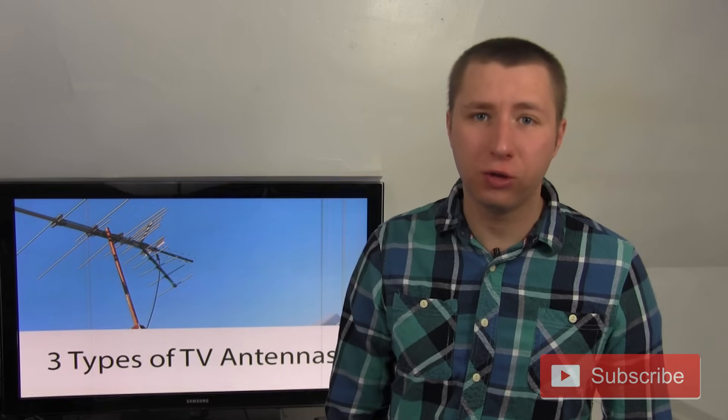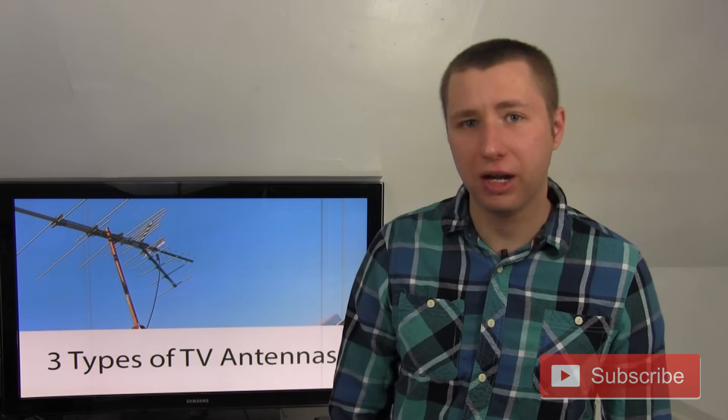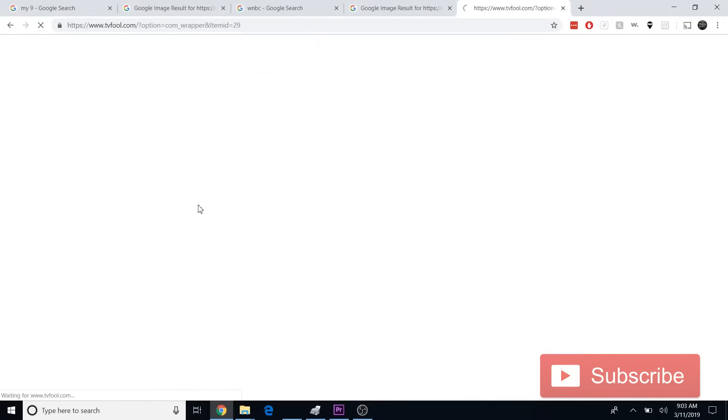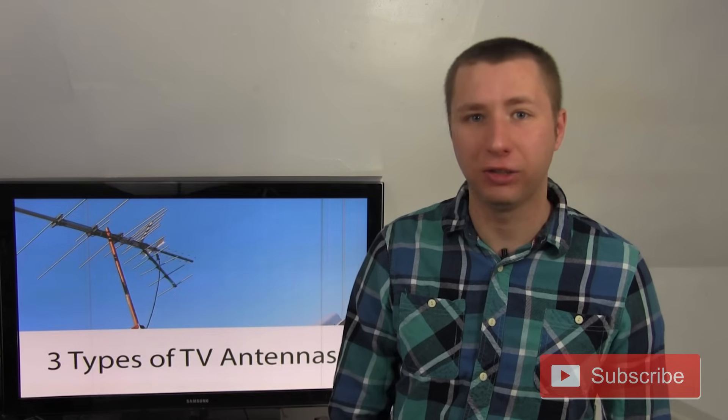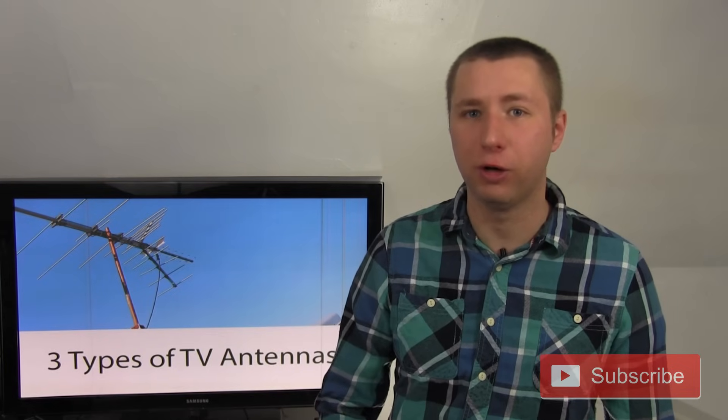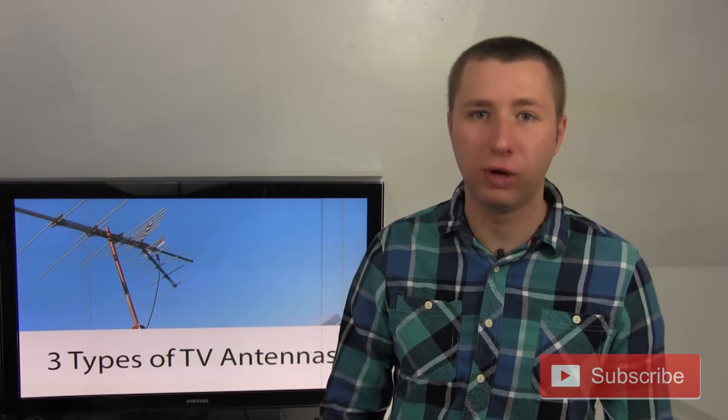Now, a way to determine what TV channels your local stations are broadcasting on is to go to tvfool.com, type in your address, and then look for the real channel number, not the virtual number. The virtual number is the channel number they identify as because CBS2 has been CBS2 forever. They're not going to automatically change this random number just to correspond to the frequency they're on.